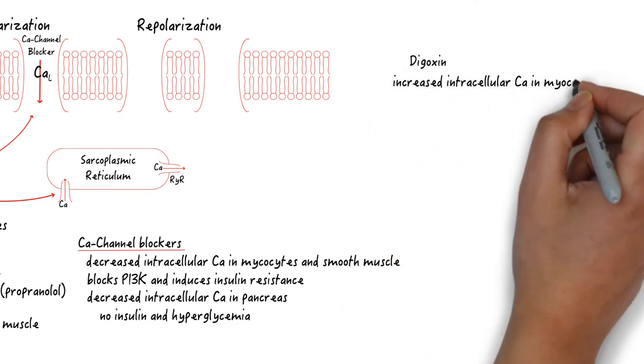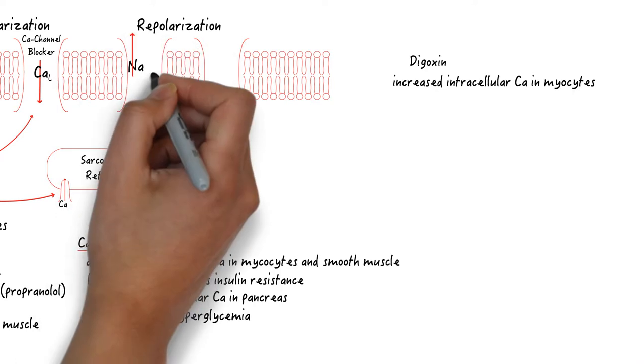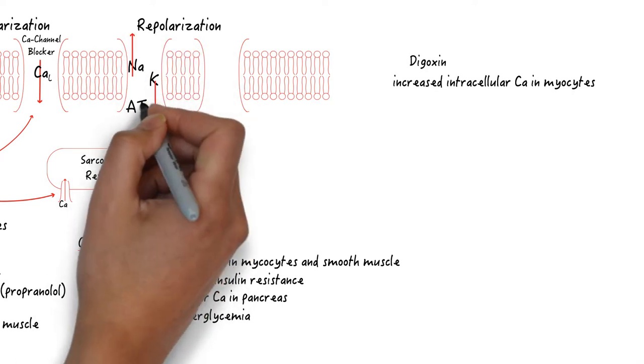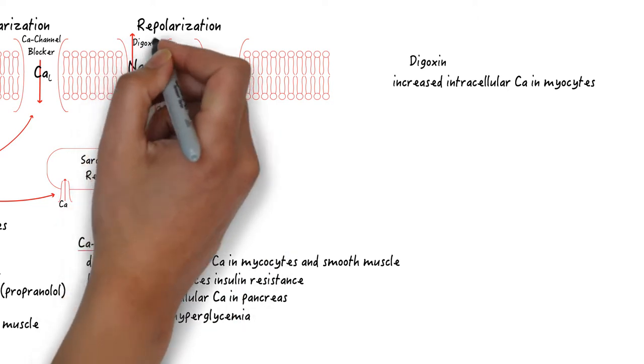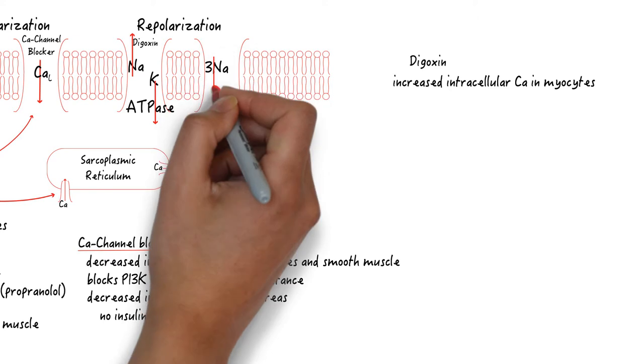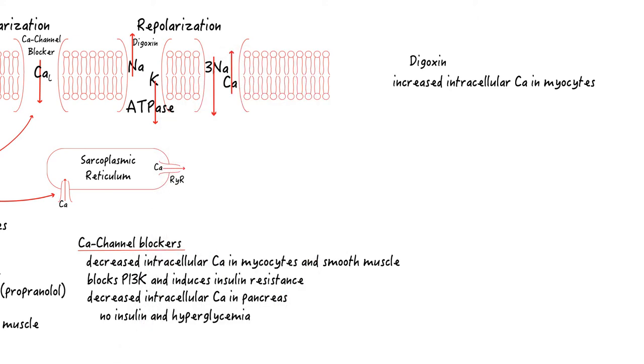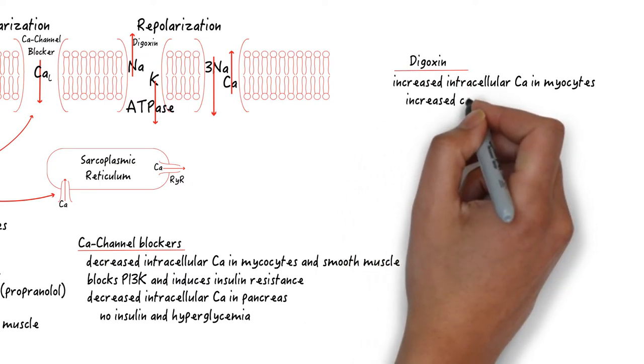Digoxin works through a very different mechanism. Instead of lowering intracellular calcium, it actually increases it. It does so indirectly by blocking the Na-K ATPase. This impairs repolarization and increases intracellular sodium. This impairs the ability for the sodium-calcium channel to work in exporting calcium and therefore causes increased intracellular calcium.